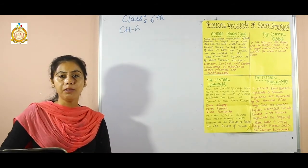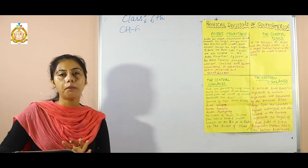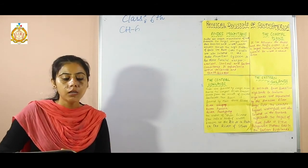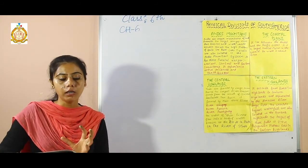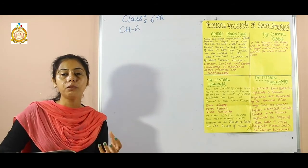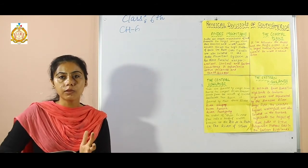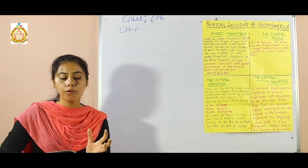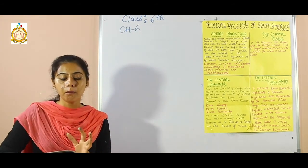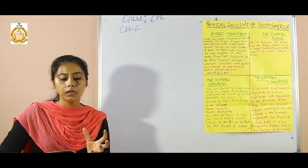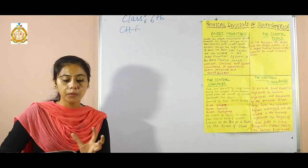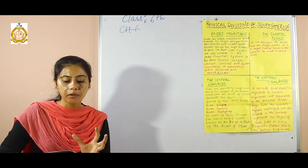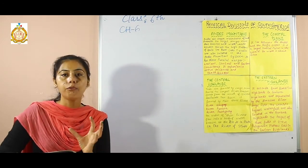The animal life in the Amazon Basin: the Amazon River Basin is home to more species of animals as well. It includes 4,000 plant species, 427 mammals, 1,300 birds, 378 reptiles, and 400 freshwater fish species.